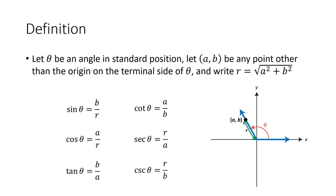Notice that our six trigonometric functions are defined to be ratios very similar to the ratios that we had in a right triangle. In fact, if you compare these formulas to the formulas that we had before, the only difference is that instead of c — the hypotenuse of our right triangle — all of the c's have been replaced with r's. Other than that, these are the exact same definitions.